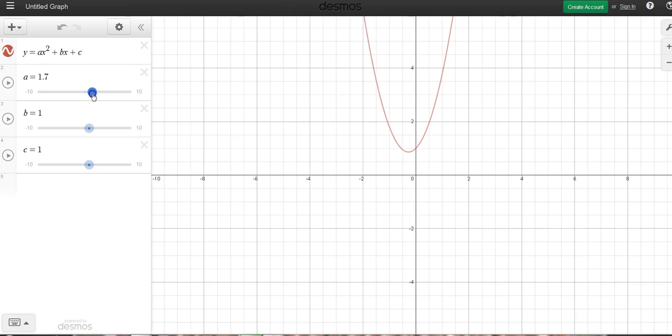Now if I go down in the opposite direction, you'll notice that once I get past 0, at 0 it becomes a straight line, but once I get past 0 and negative, the parabola flips. It goes downward.